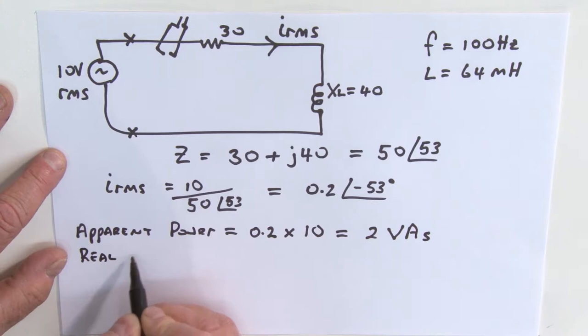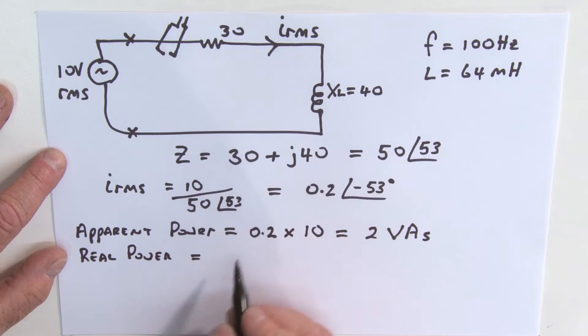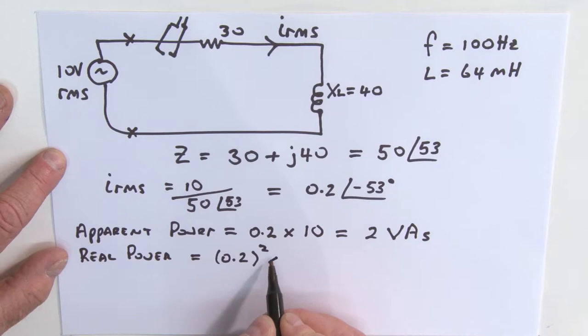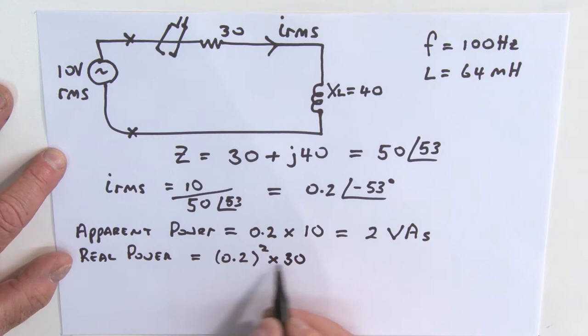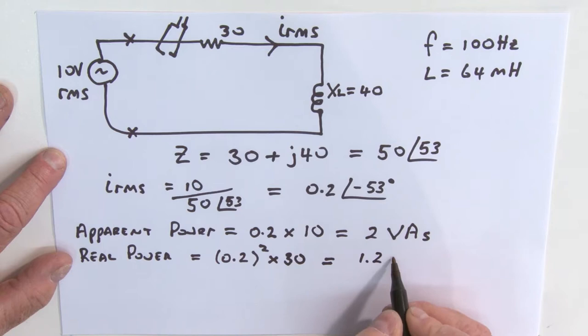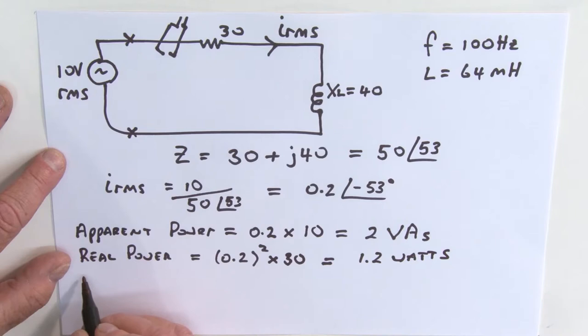The real power, or true power, is going to be equal to this current, 0.2 squared, and that's multiplied by our resistance, which is 30. So that's an I squared R relationship, and that is equal to 1.2. And of course, the units are watts.